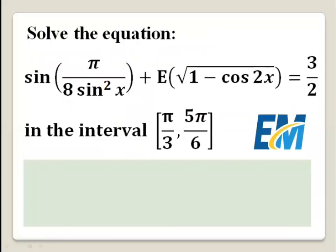Hi everyone. Today we are going to be solving the following interesting equation: sine of pi over 8 sine squared x plus the integer part of the square root of 1 minus cosine 2x, equals 3 over 2. We want to find the solution of this equation that belongs to the interval pi over 3 to 5 pi over 6.